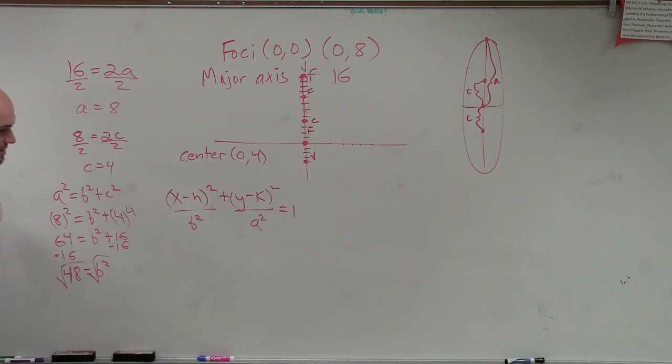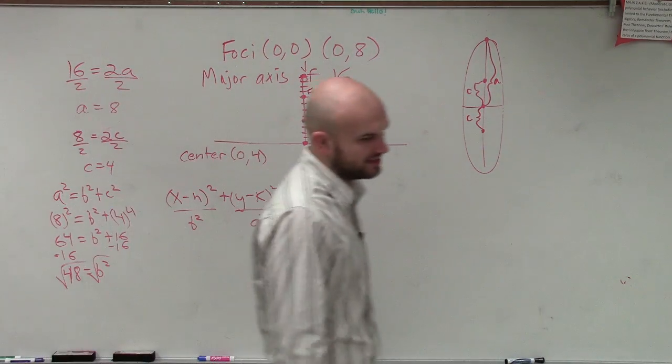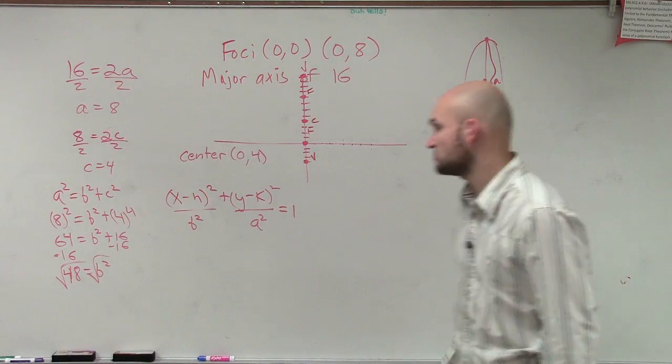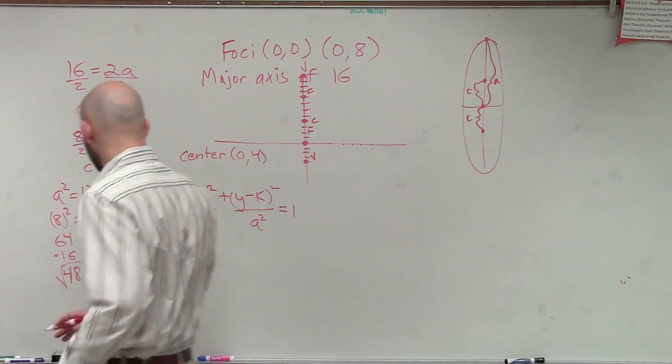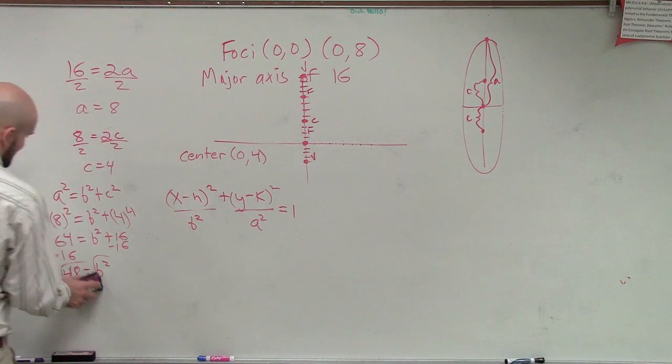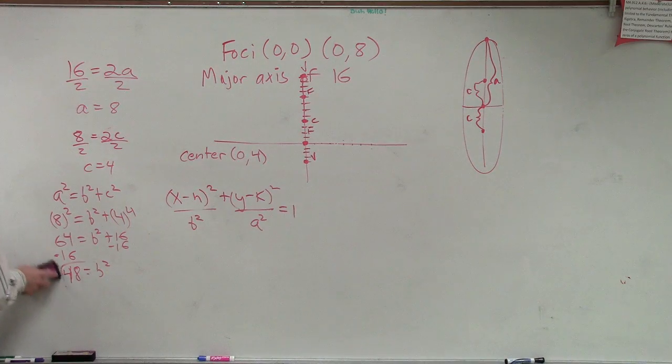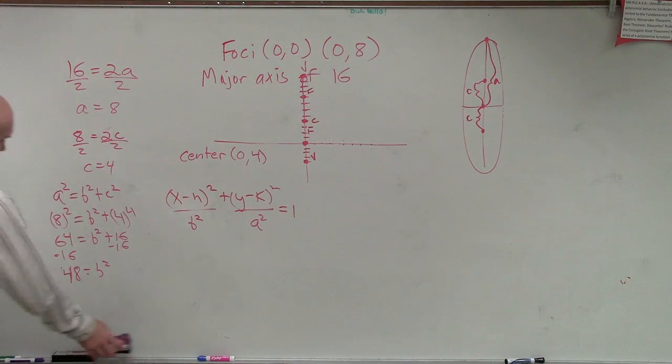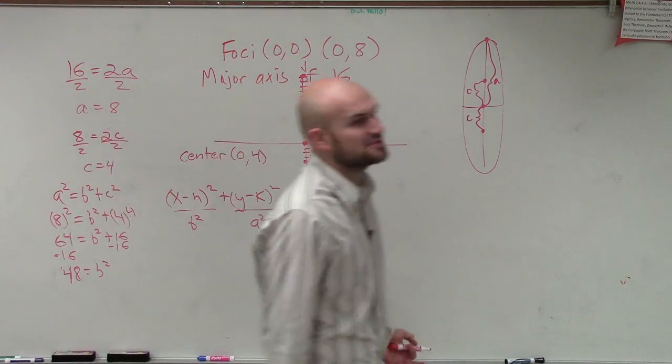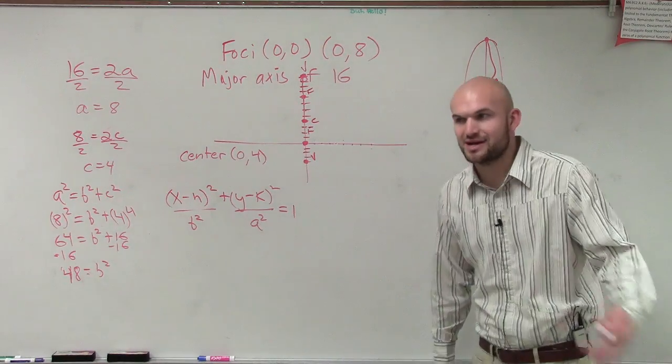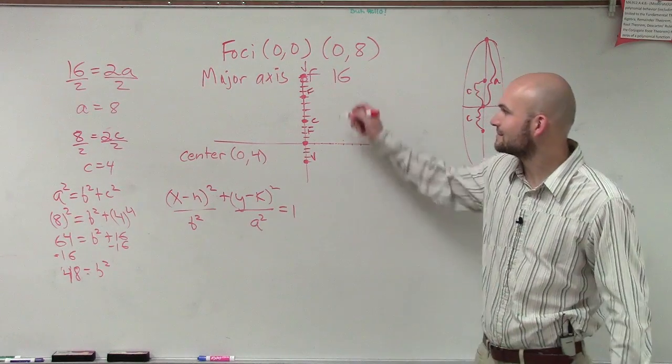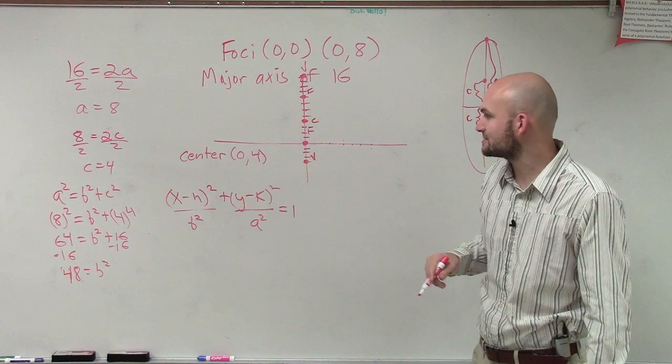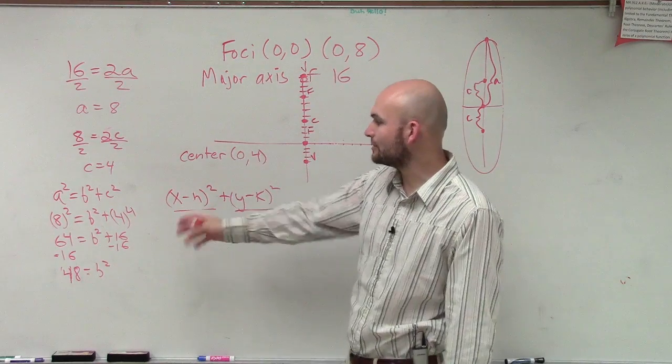I'm in such a habit of rationalizing or simplifying my radicals. We don't care what B is. We just want to know what B squared is. We're not trying to find how wide our ellipse is. So, we just have, so now we know what B squared is.